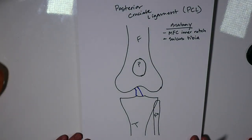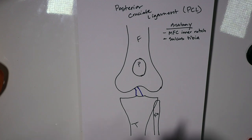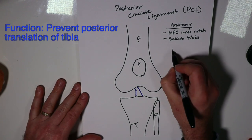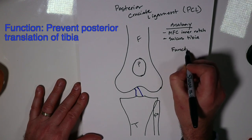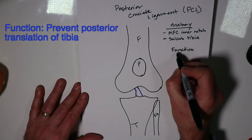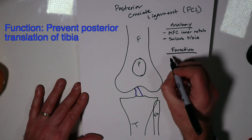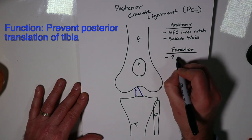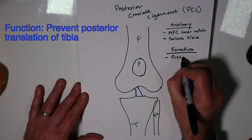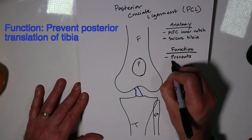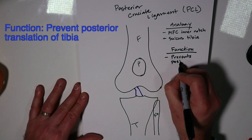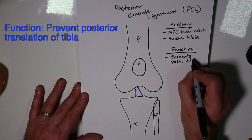Given that location and anatomy, what is the PCL's function? The PCL's function is to prevent posterior translation of the tibia on the femur — it prevents posterior tibial translation.